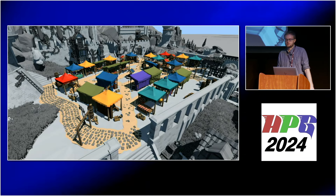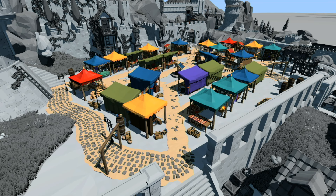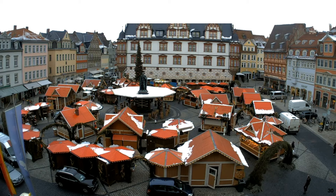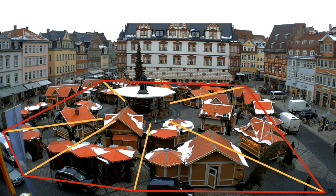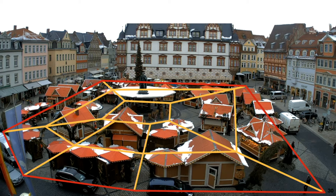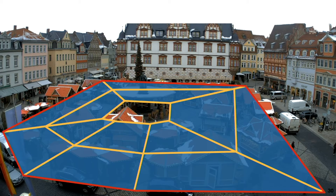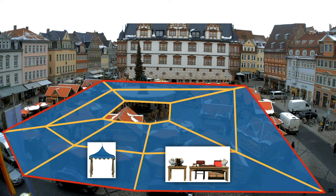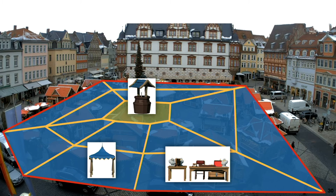Let's start with our first example — we want to generate this marketplace. We went on a research trip to the Huber Christmas market and observed that the basic shape can be described as a polygon. From the corners of this polygon there are paths leading towards the center, with more interconnecting paths in between. Between those paths there are booth islands where we place assets like tents or market stalls. In the center is a special area with a special asset — a well, a tree, or a statue.